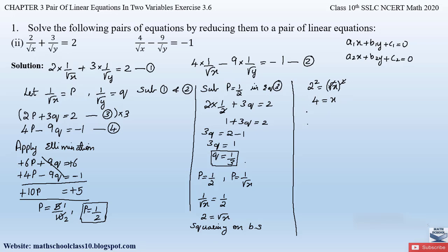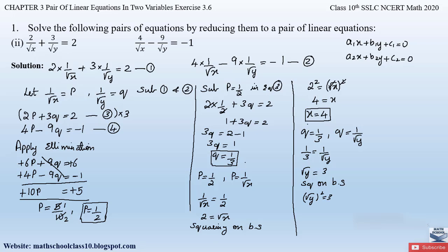Similarly, since q = 1/3 and q = 1/√y, we equate: 1/√y = 1/3. Cross-multiplying gives √y = 3. Squaring both sides: (√y)² = 3², so y = 9. Therefore, x = 4 and y = 9 is the solution for the given pair of equations.